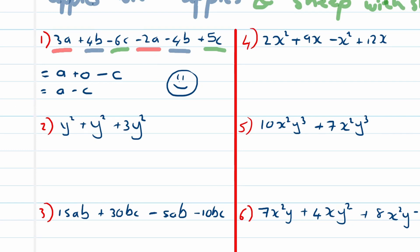Now let's look at number two. So number two: y² + y² + 3y². So how many y squares are there? One plus one plus three. So this is equal to 5y².